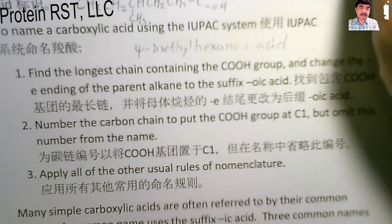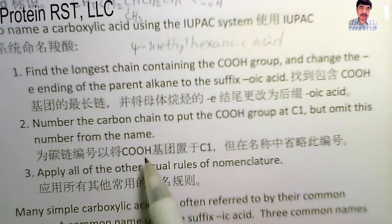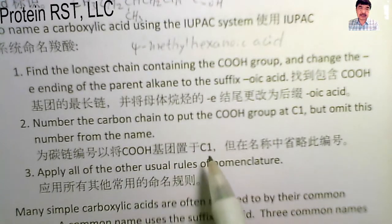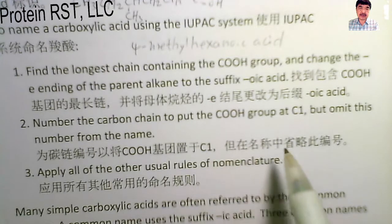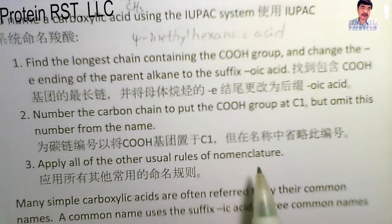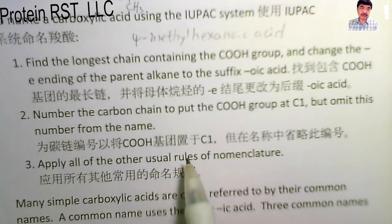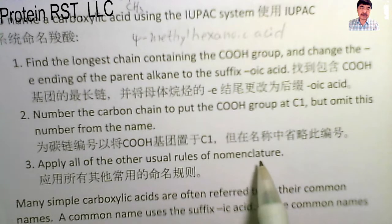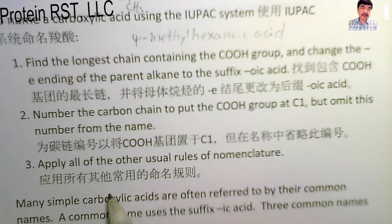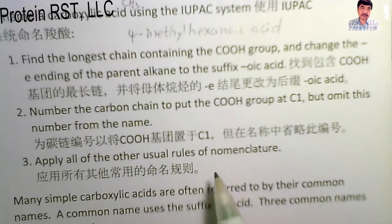Number the carbon chain so that the COOH group is at the C1 position, but omit this number from the name. Then apply all of the other IUPAC rules of nomenclature for alkanes.